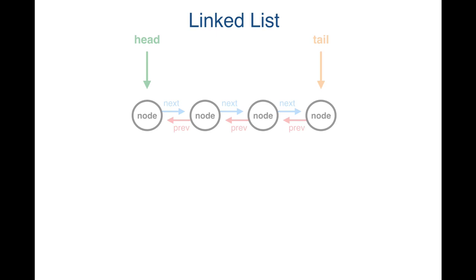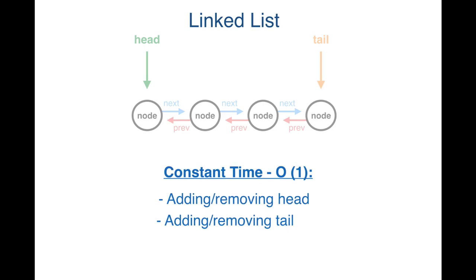Linked lists have a constant time, or O(1), runtime for adding and removing nodes from the head and the tail. This is because we are using our head and tail pointers to keep track of those nodes. Therefore, we never have to iterate through the whole linked list to find the head or tail. We can find it and perform an operation on it in constant time because we always know right where they are. So adding and removing nodes to the head and tail of our linked list is clearly very performant.